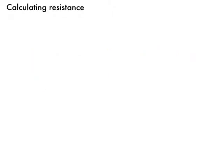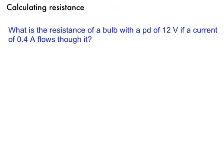So, let's apply that bit of knowledge here. Let's have a question. What is the resistance of a bulb with a potential difference of 12 volts if a current of 0.4 amps flows through it?